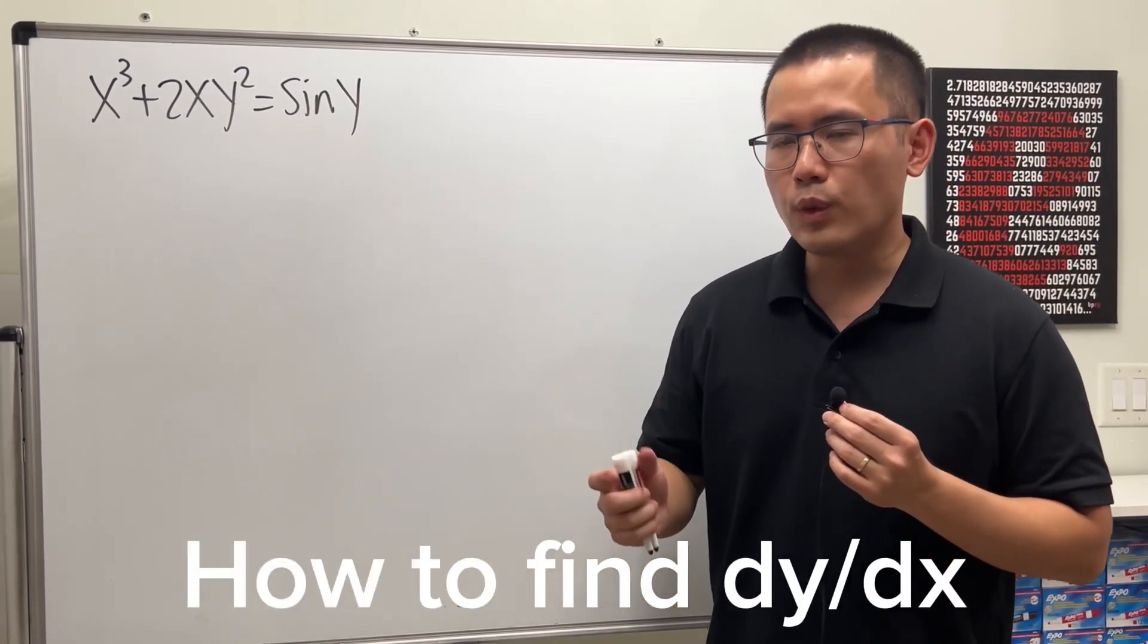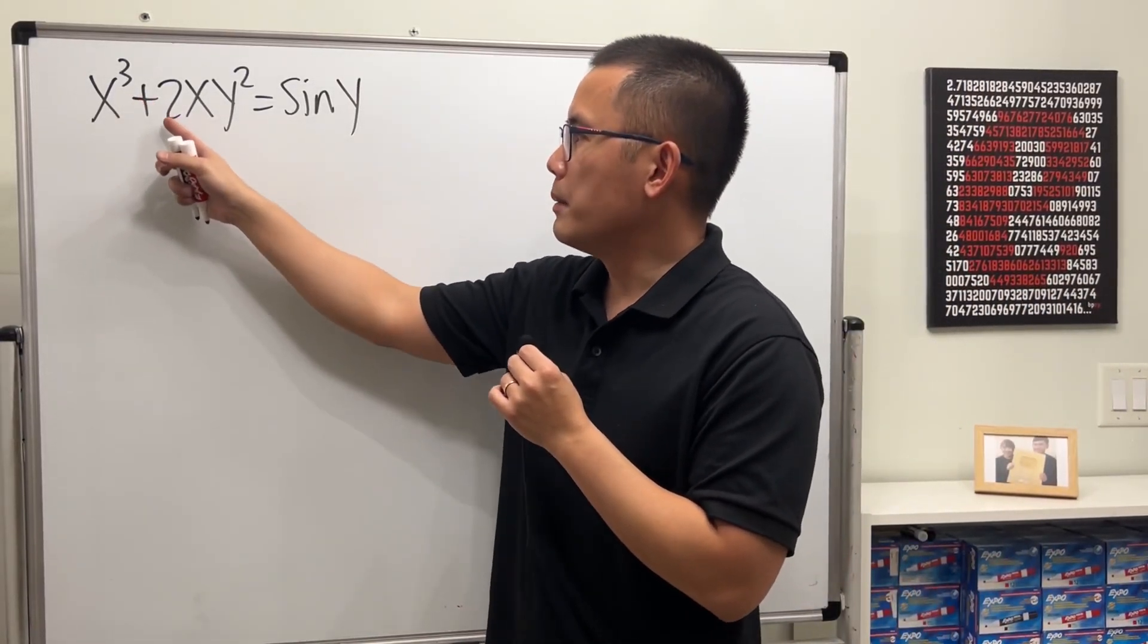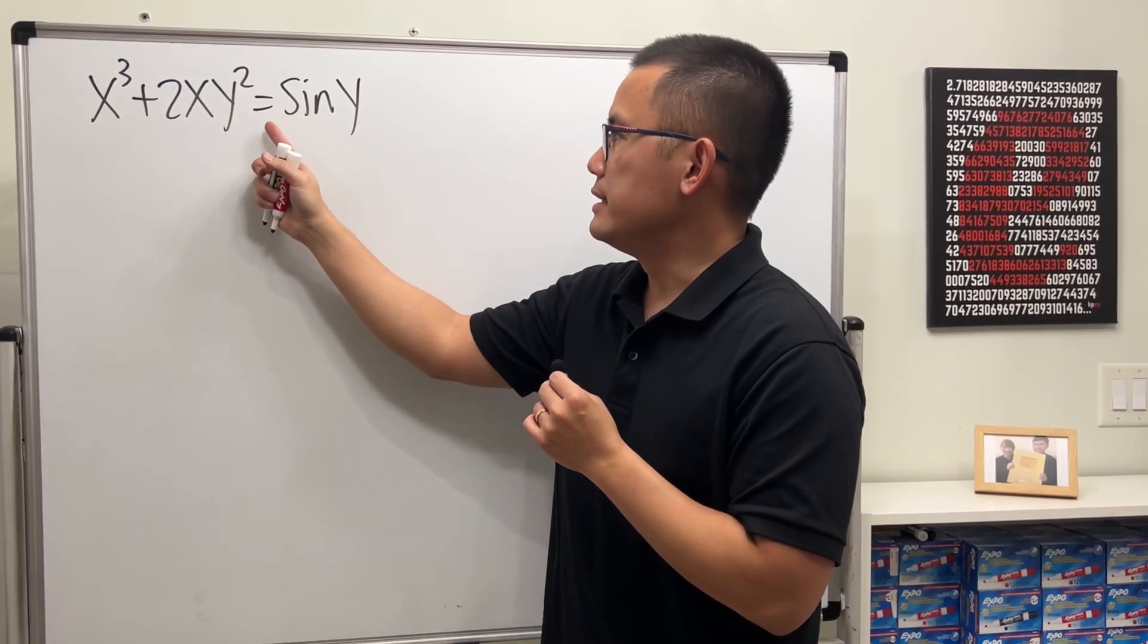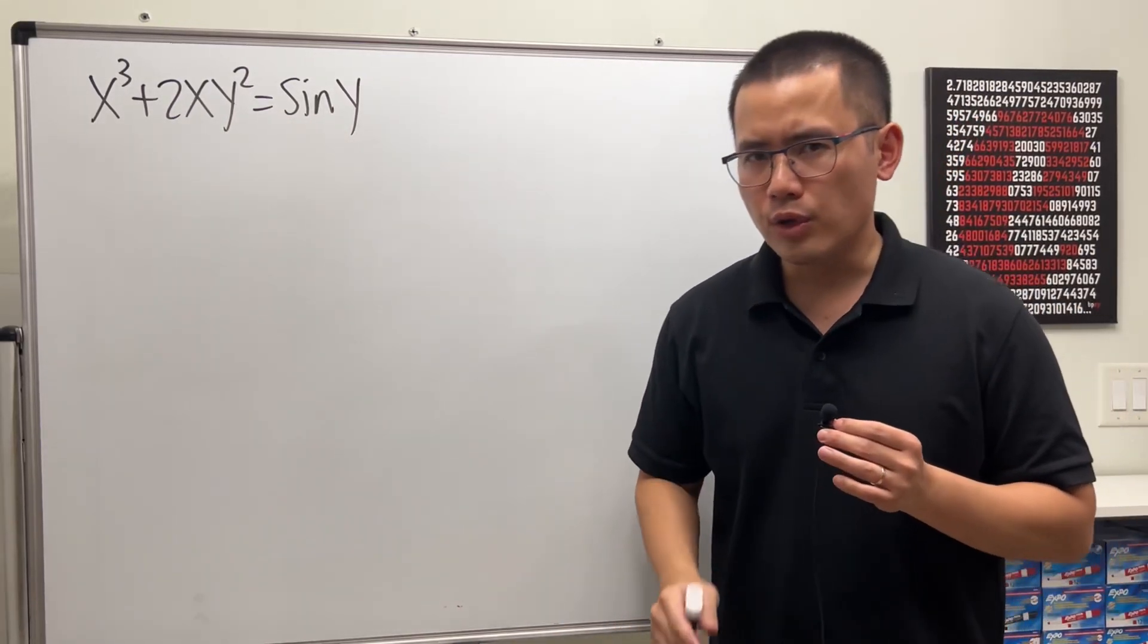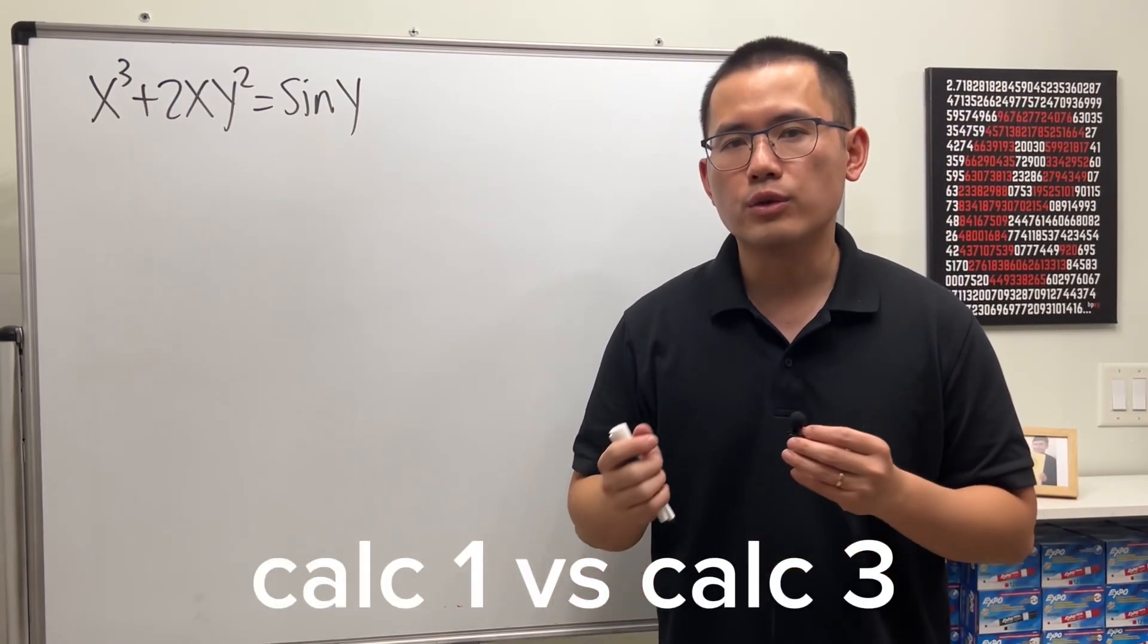All right, today let's talk about how to find dy/dx for x cubed plus 2xy squared equals sin y, and we are going to talk about the Calc 1 way and also the Calc 3 way.